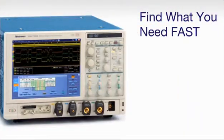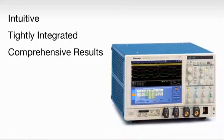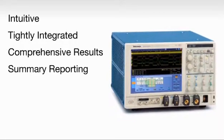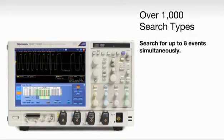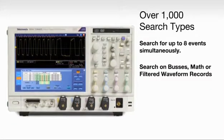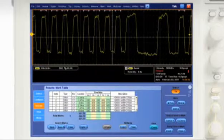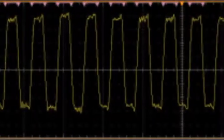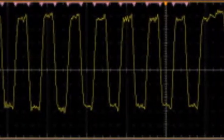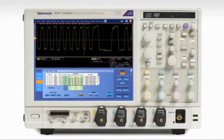The advanced search and mark system provides unprecedented flexibility and increased precision for finding complex events. You can even search on buses, math waveforms, or records created from applied functions like spectral analysis. Advanced search and mark makes it easy to summarize your results by auto-populating a results summary table. Immediately jump to an event with a mouse click. With advanced search and mark, searching for critical information has never been easier.